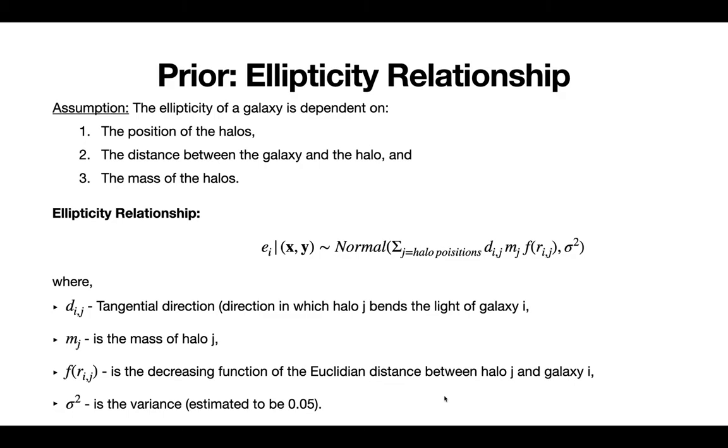So we have this normal distribution, where D is your tangential direction, or the direction in which halo j bends the light of galaxy i. Your M is your mass of halo j. You have this function F of R, where R is the Euclidean distance between halo j and galaxy i, and this is called a decreasing function. And then you have a variance, which we're going to assume to be 0.05.